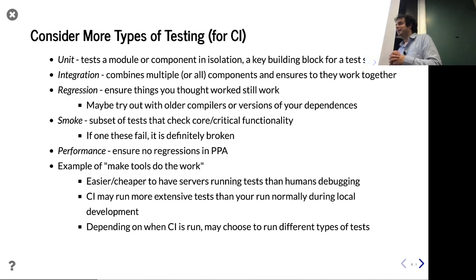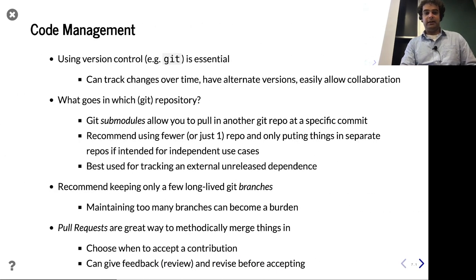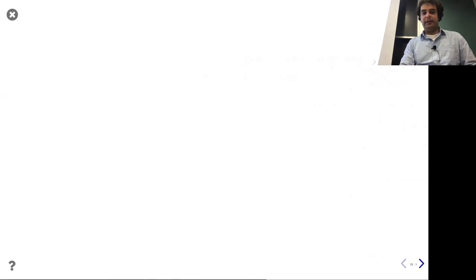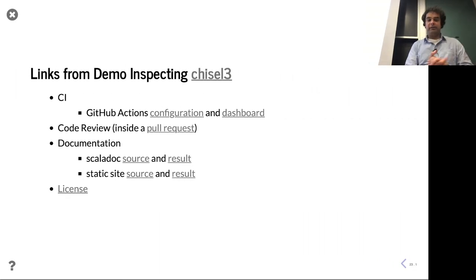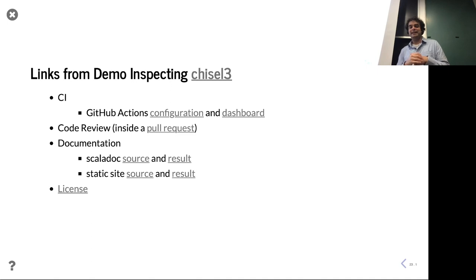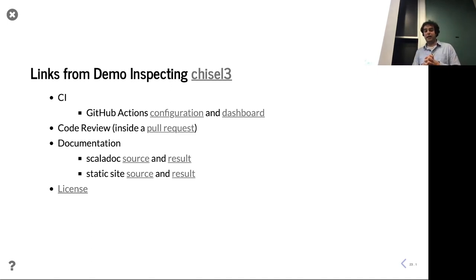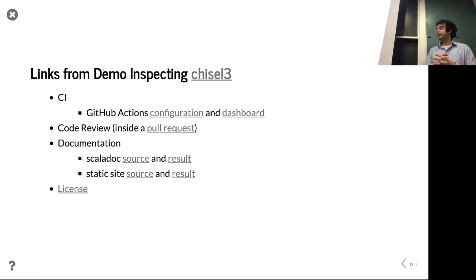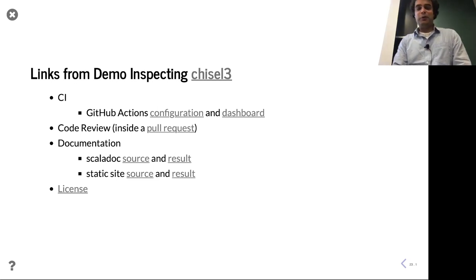That was a lightning tour of CI. Let me skip to the last slide — I have some links from the very Chisel3 project. We depend on Chisel3, which is an actively developed open source project. These days contributors come from a number of organizations, not just SiFive. If you go into the Chisel3 GitHub page and scroll down, you can see they have continuous integration — it says it's passing, which is a good sign.